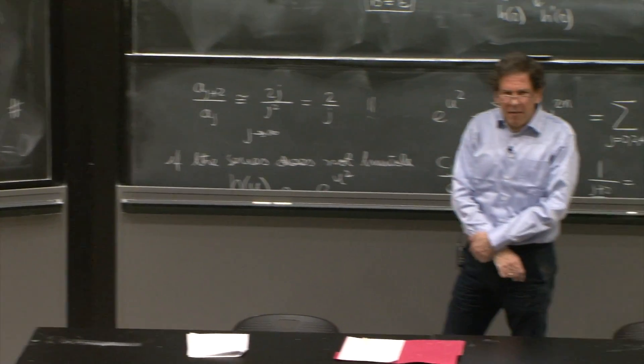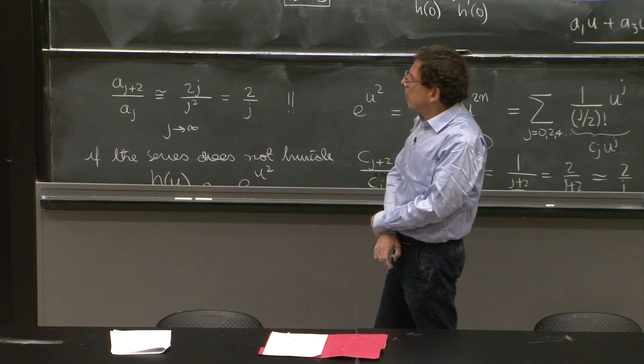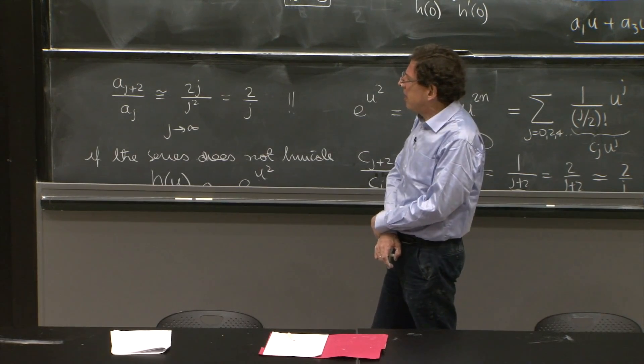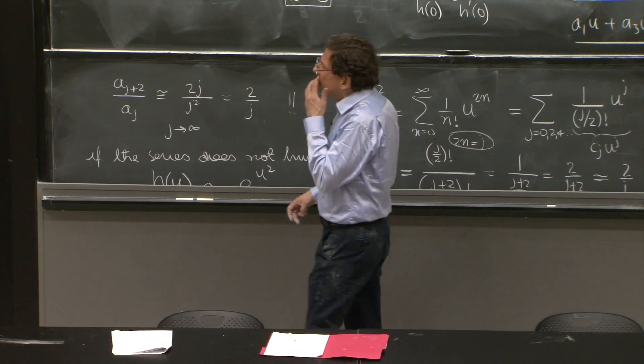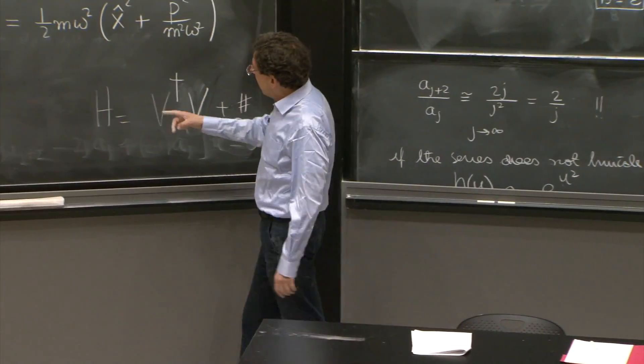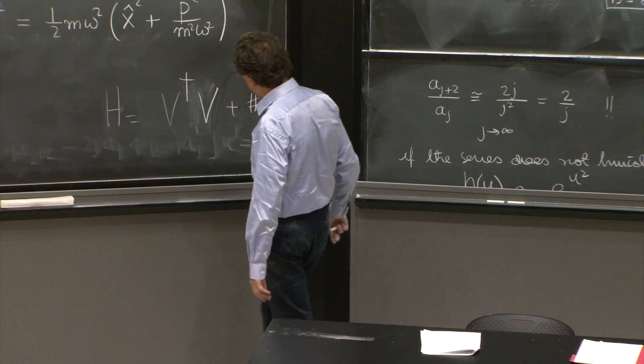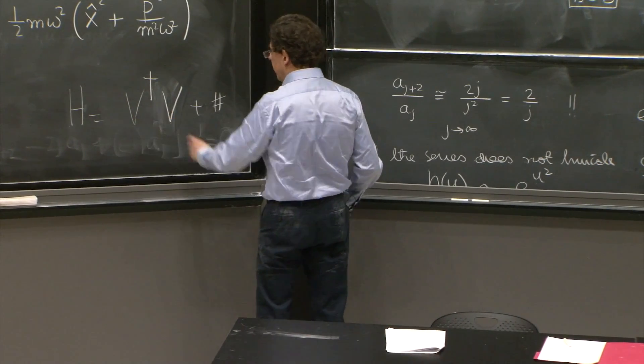And you would say, why v dagger v? Why not v, v dagger, or v, v, or v dagger, v dagger? Well, you want the Hamiltonian to be Hermitian. And this thing is Hermitian.